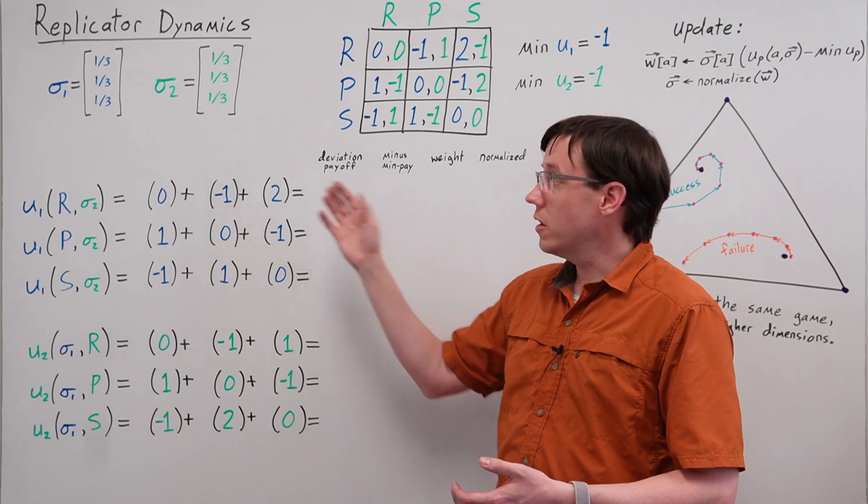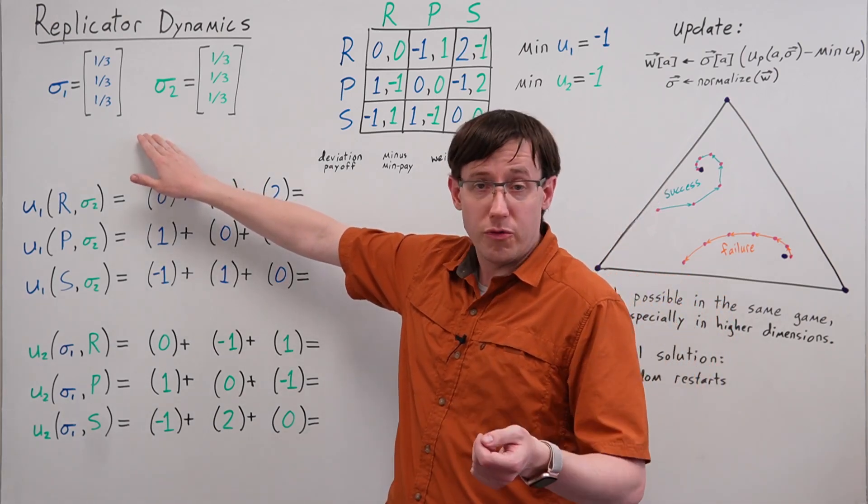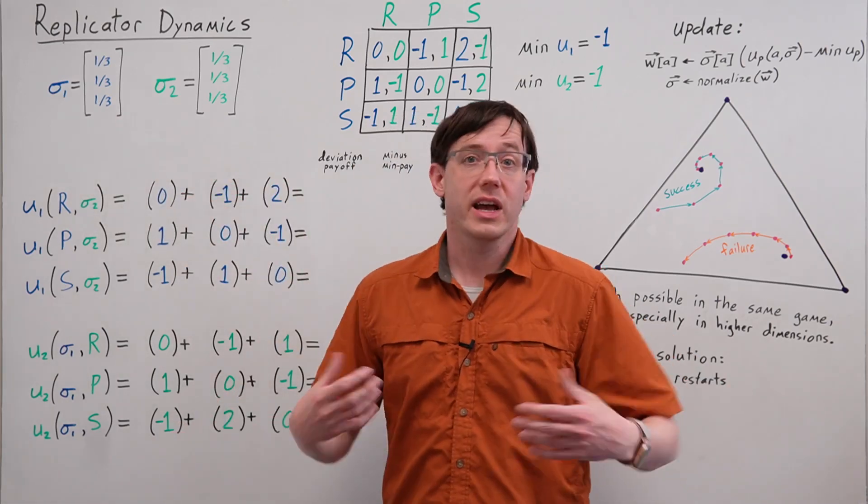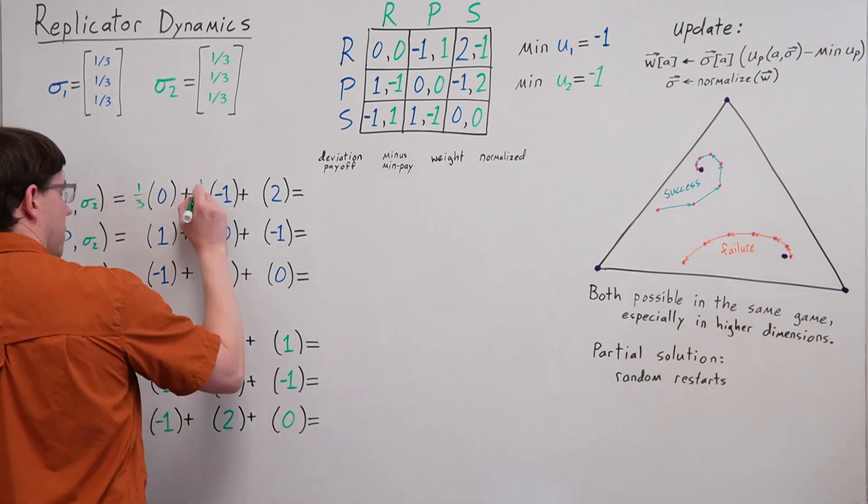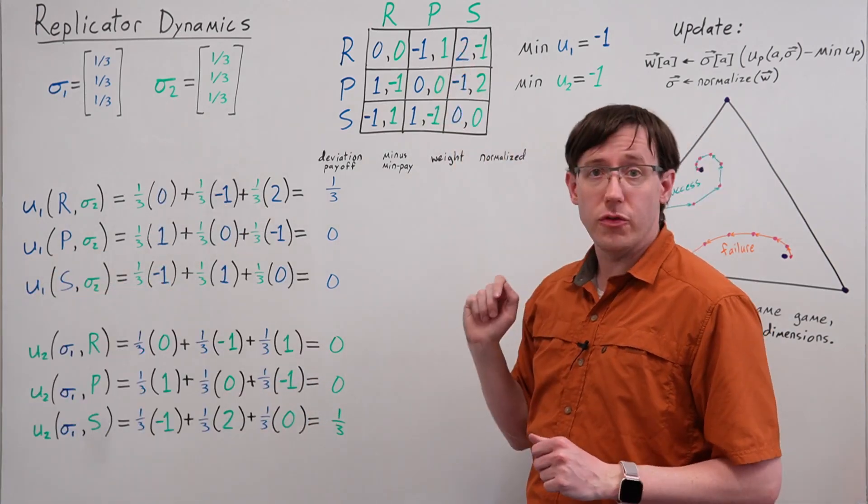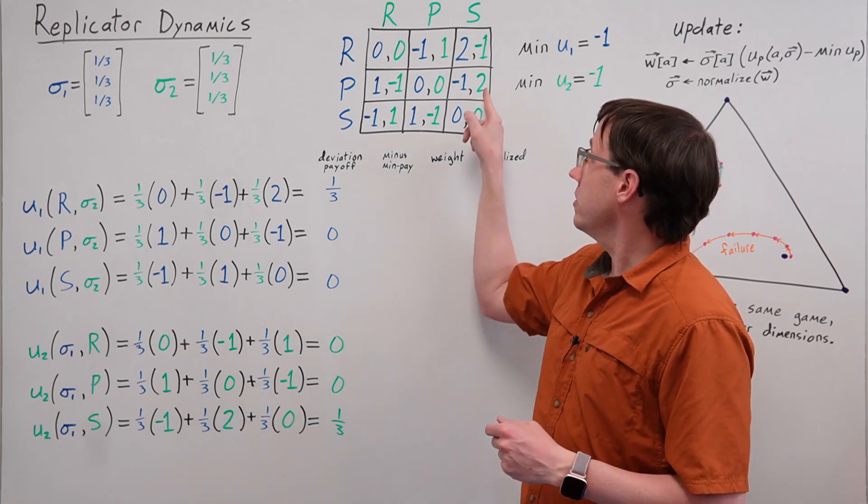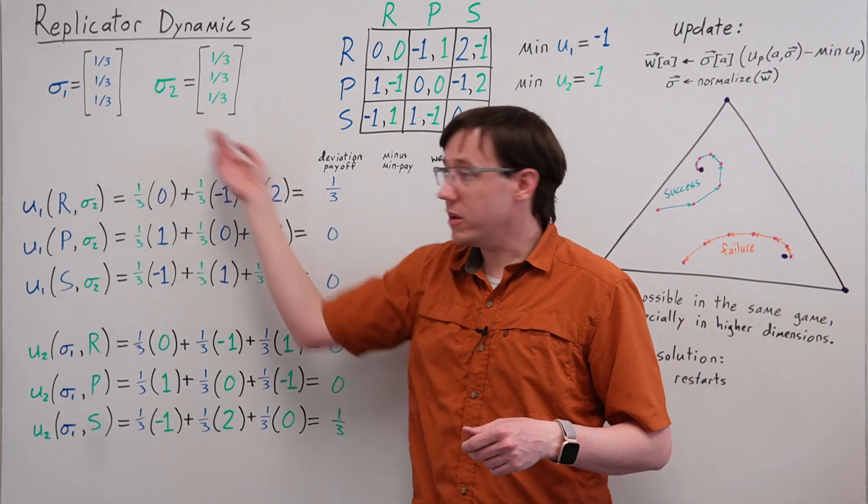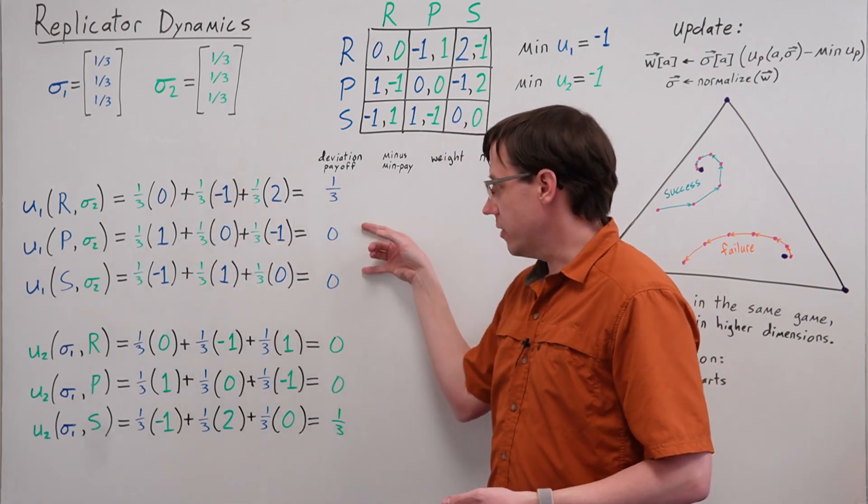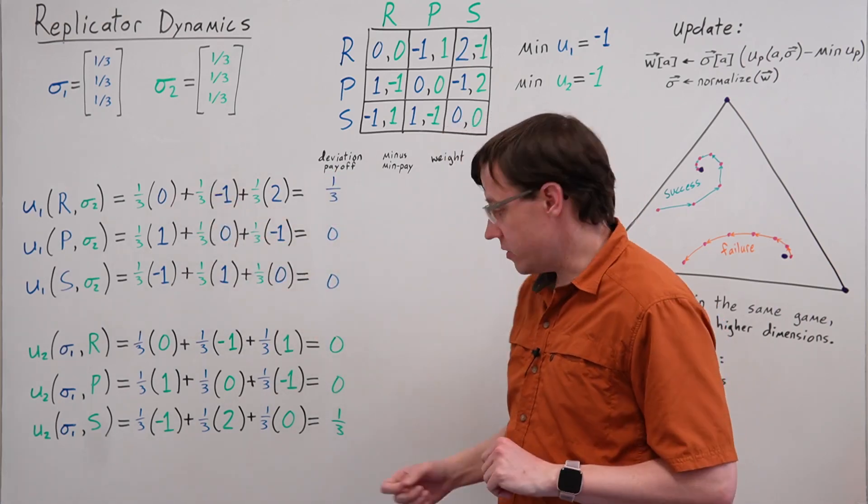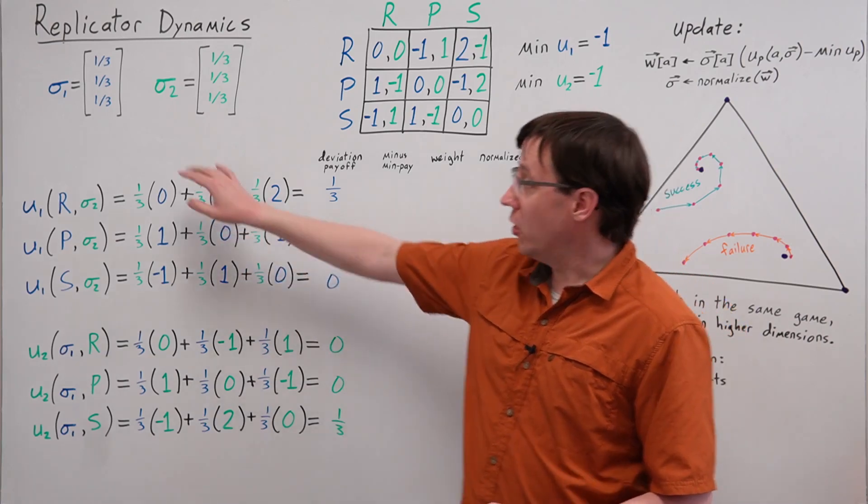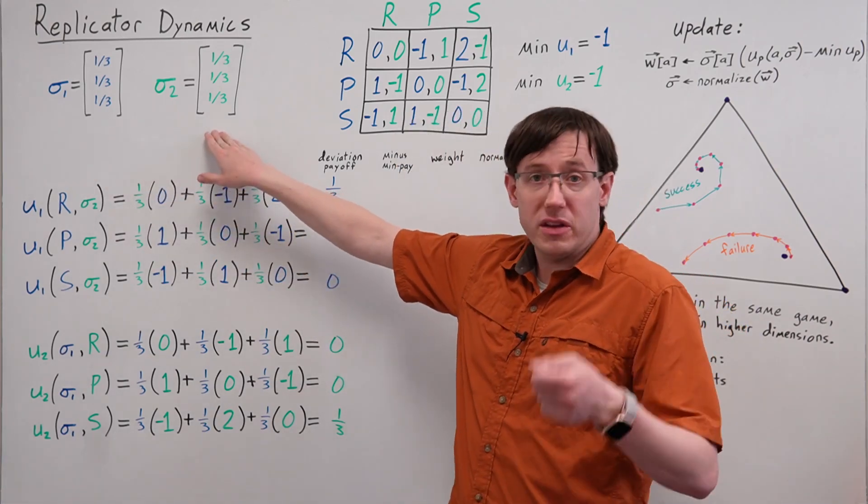In this rock-paper-scissors variant, starting from an initial profile where both players are mixing uniformly, we can calculate the deviation payoffs exactly the same way we did in the last video. Since Player 1 has a slight preference for winning with rock, Player 1 has a slightly higher deviation payoff for rock than for paper or scissors, and likewise Player 2 has a slightly higher deviation payoff for scissors. Now we will use these deviation payoffs to perform a multiplicative update on the mixed strategy probabilities.